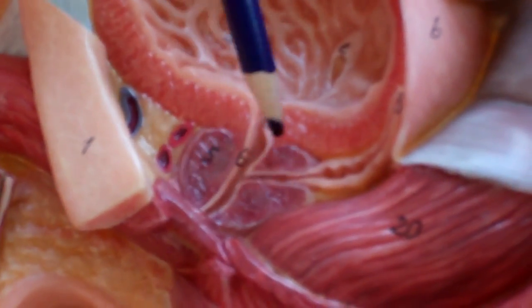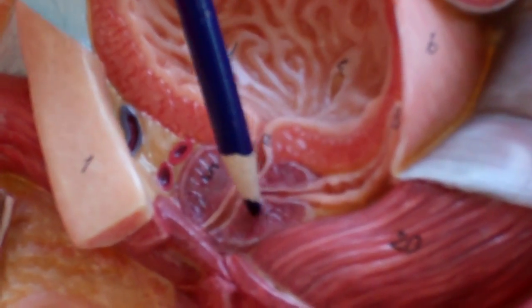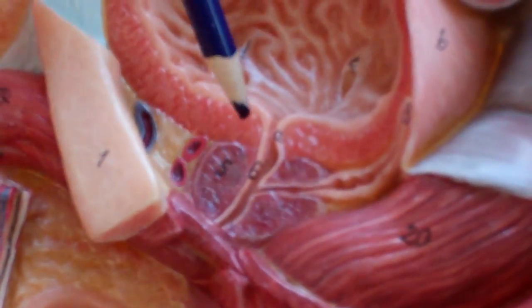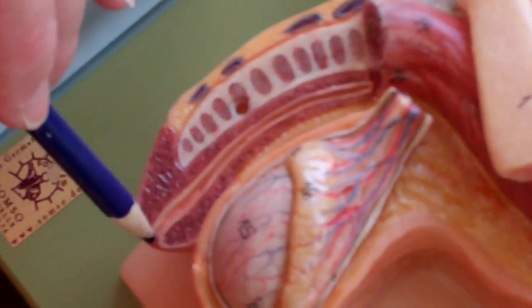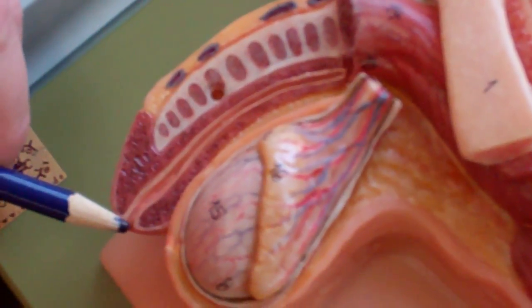And then this donut-shaped structure right here, this is the prostate. We have the bladder, the urethra that comes down. The urethra comes all the way out until you get to the external urethral orifice.